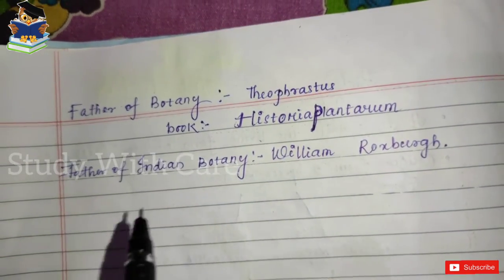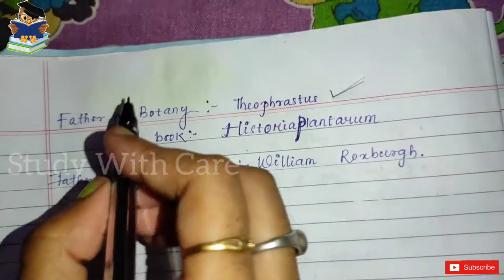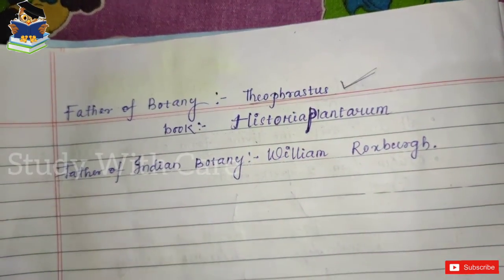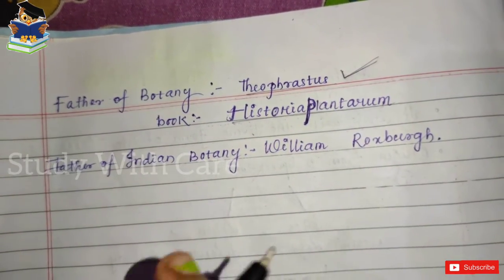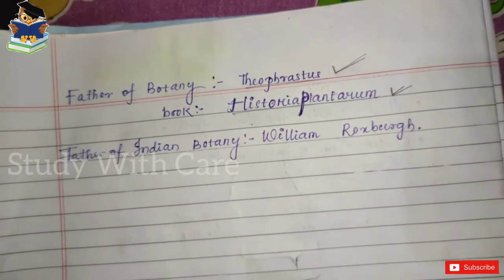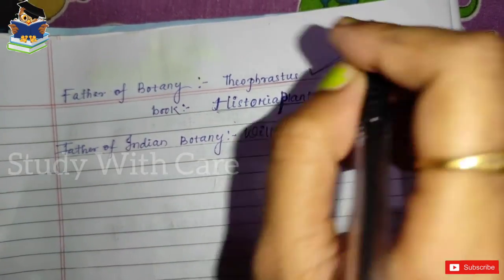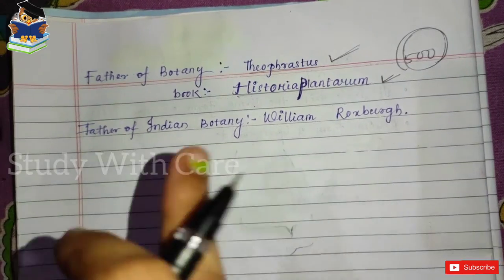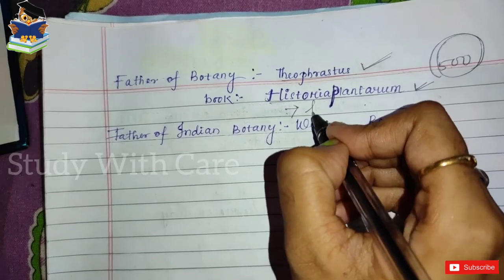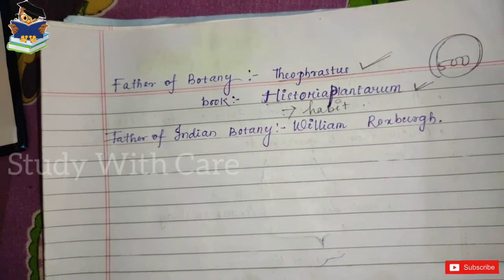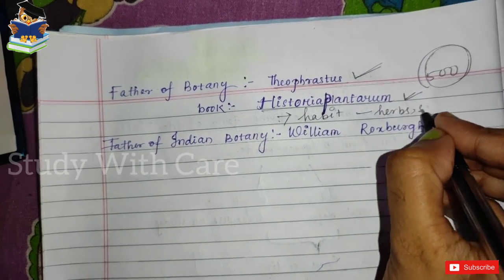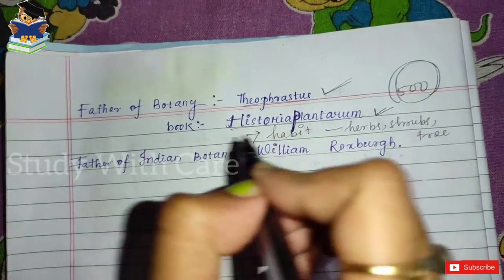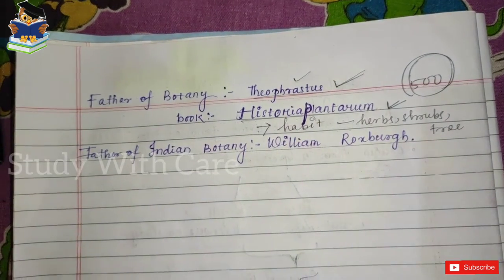The father of botany is Theophrastus. The father of biology was Aristotle, and similarly the father of botany was Theophrastus. Theophrastus wrote a book called Historia Plantarum, in which he first described about 500 plants of food and medical value, and other economic uses. The book was based on the habits of plants, such as herbs, shrubs, trees, and annuals according to their habitat.